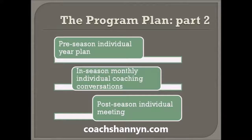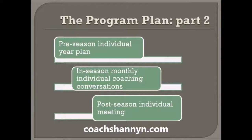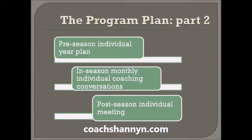The program plan, part two — this is what we would do with each individual athlete and or team. You have a pre-season individual year plan, where you sit down with the athlete and go over what is actually going to happen during the beginning of the season. The in-season monthly individual coaching conversations happen about once a month, where coaches meet with their athletes and explain what's going on. Post-season individual meetings happen at the end of the season to recap, evaluate what the season produced, and how you can improve going into the next season.